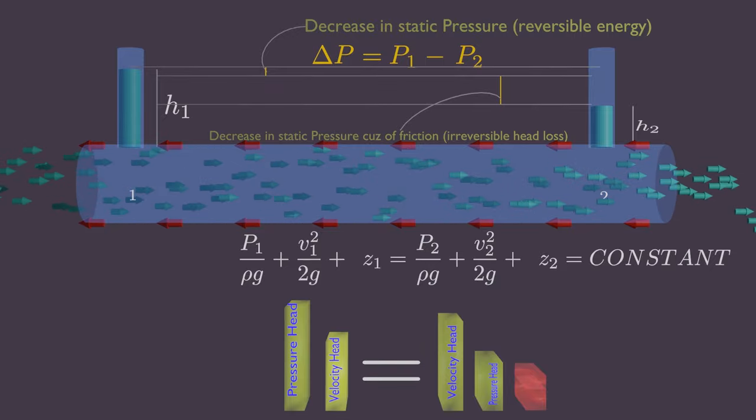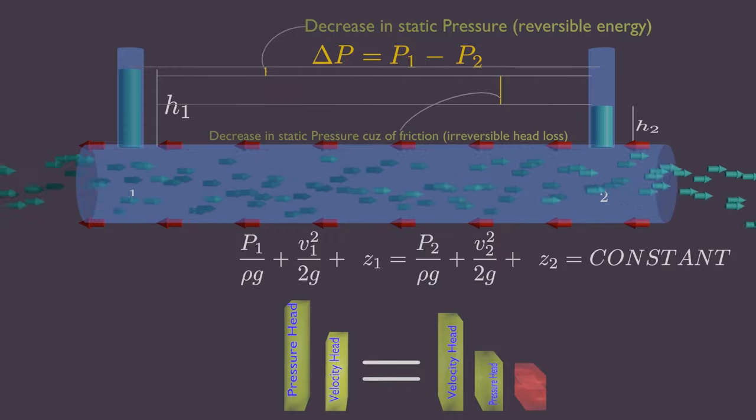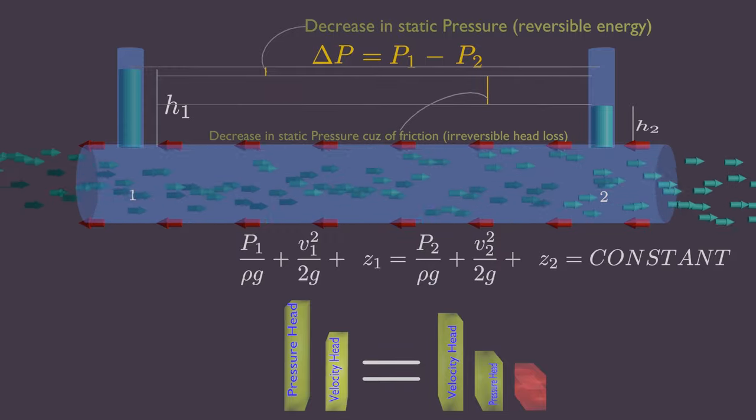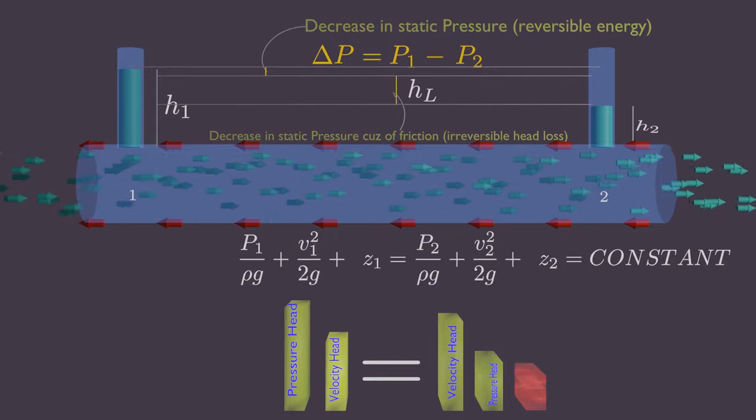The height of liquid column drops even more due to friction. So the loss of liquid column height due to friction effect or other irreversible effects is called head loss.